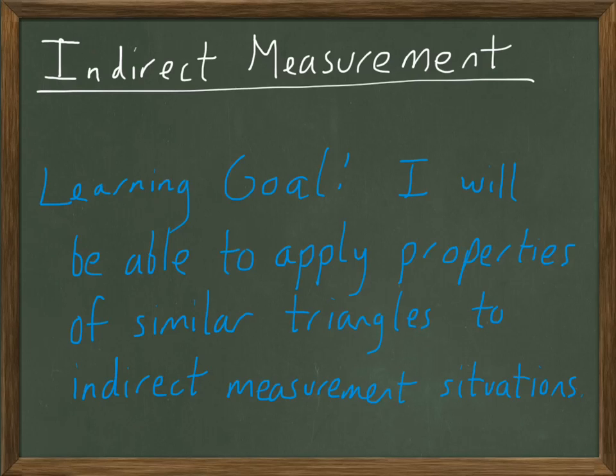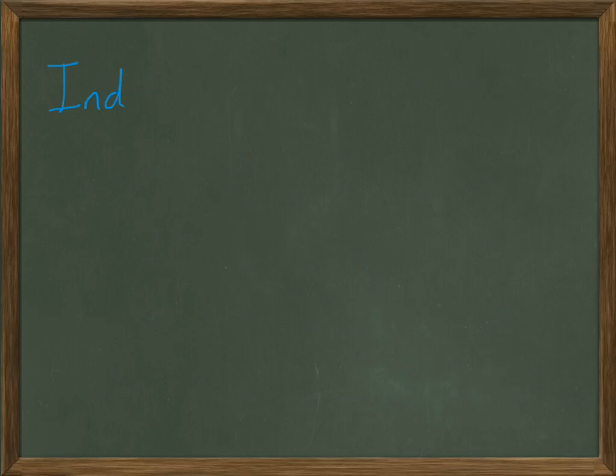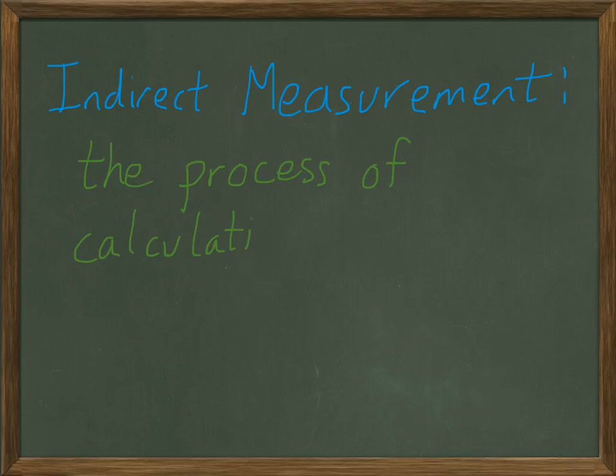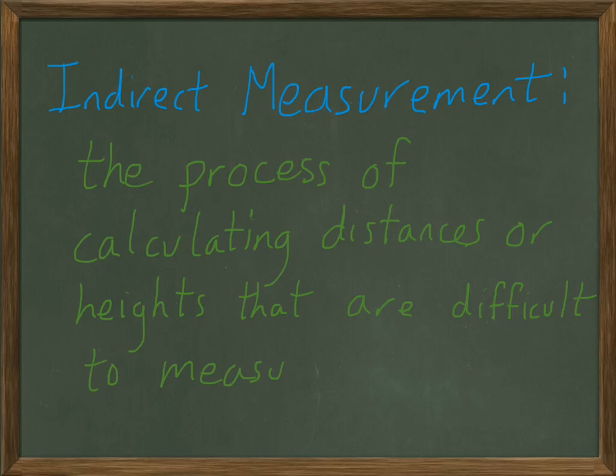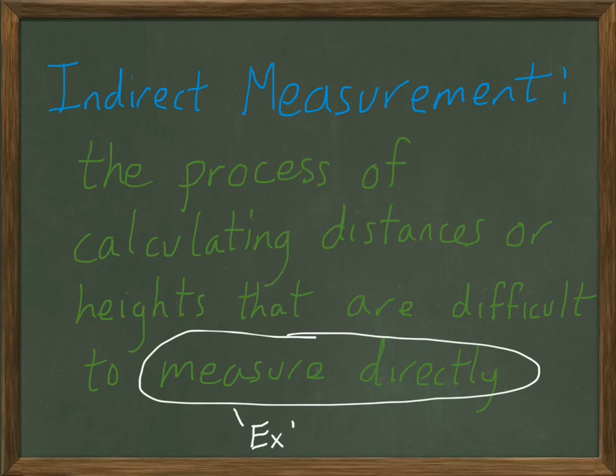What exactly do I mean by indirect measurement, anyway? To sum it up, it's basically measuring something, but not in a direct fashion. Indirect measurement is the process of calculating distances or heights of some kind that are difficult to measure otherwise. You can't measure them directly very well. What do I mean by directly? Well, I mean like with a ruler.